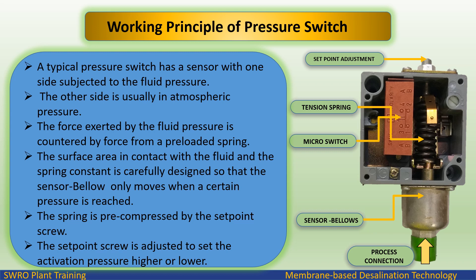A typical pressure switch has a sensor with one side subjected to the fluid pressure; the other side is usually at atmospheric pressure. The force exerted by the fluid pressure is countered by force from a preloaded spring. The surface area in contact with the fluid and the spring constant are carefully designed so that the sensor bellow only moves when a certain pressure is reached. The spring is pre-compressed by the set point screw, which is adjusted to set the activation pressure higher or lower.